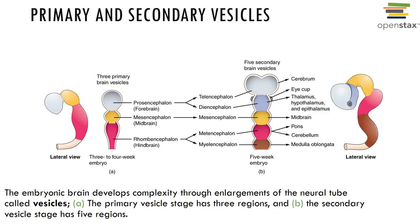You can see the formation of the primary brain vesicles: the forebrain, the midbrain, and the hindbrain. Around week five of development the primary brain vesicles have changed position, and the forebrain and hindbrain have further subdivided to form secondary brain vesicles. The midbrain does not significantly change during development. As development continues, the cerebrum enlarges to the point where it covers the other portions of the brain.